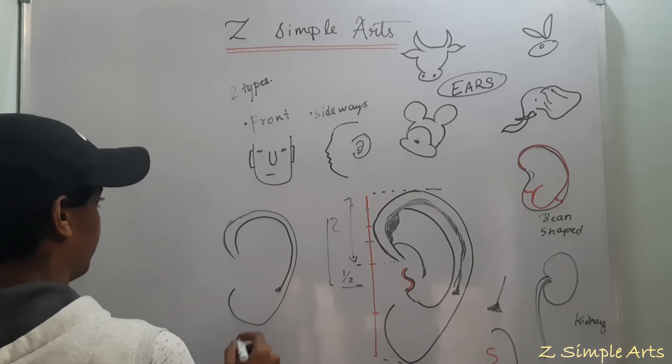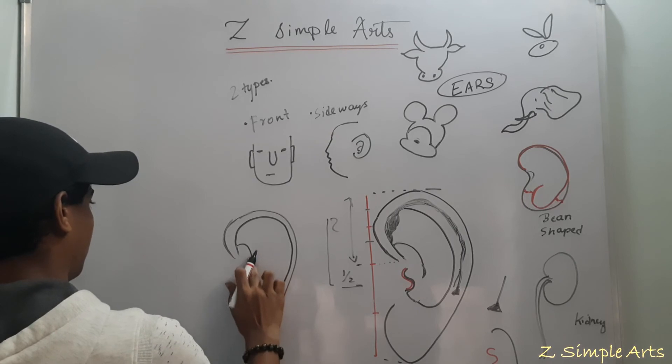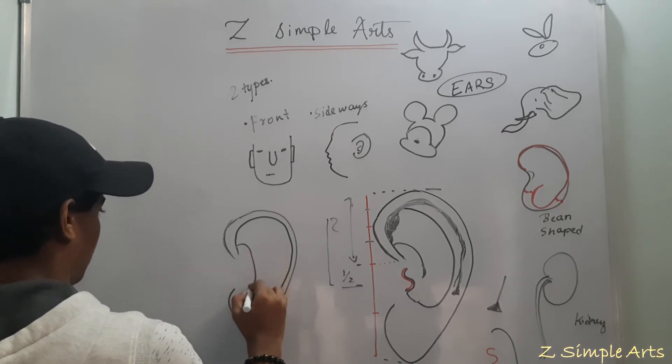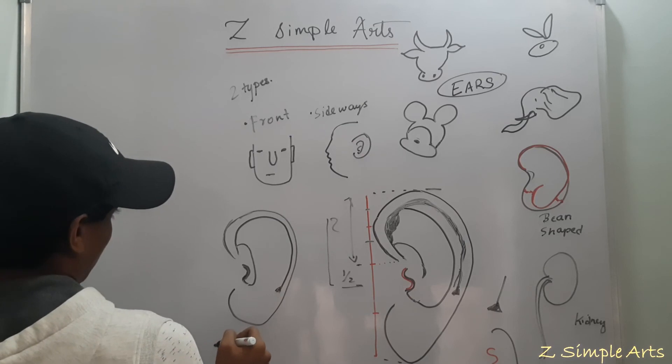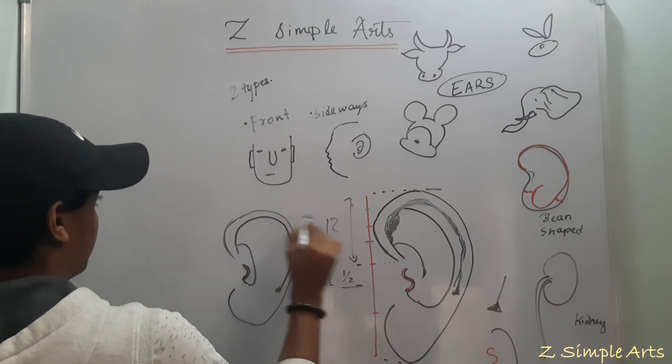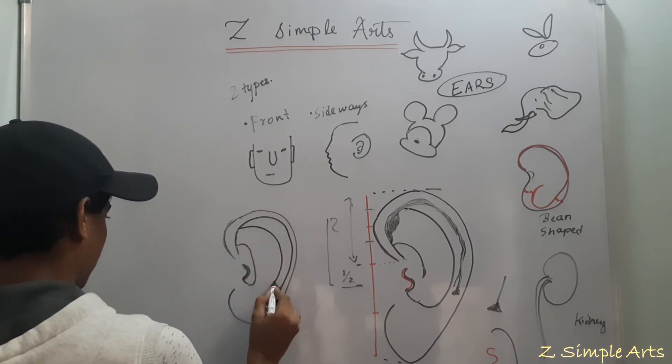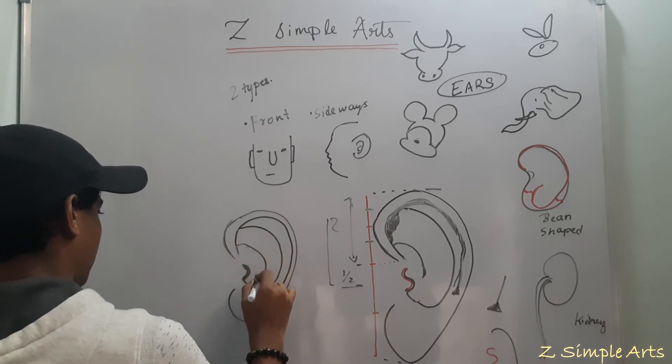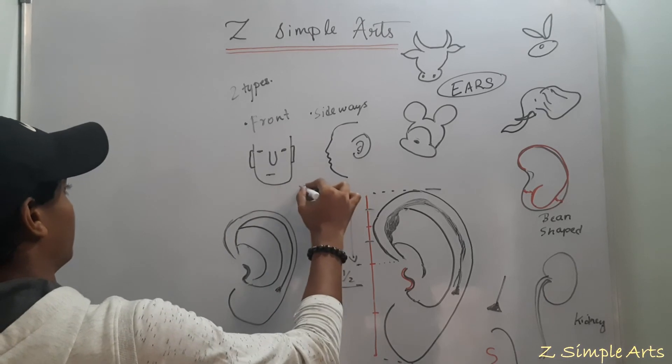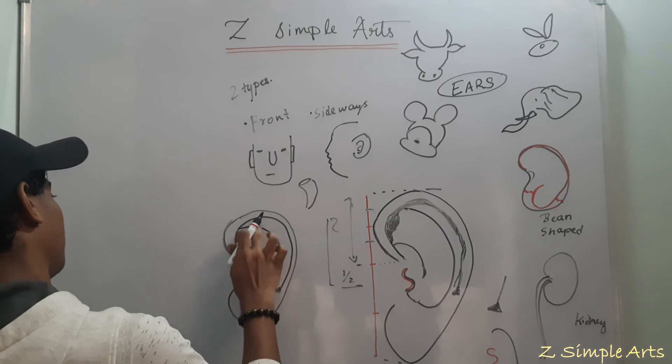So moving further, draw a C, elongated C. And Y. And the last part, from this point half, take a curve and join this line. This should look like a funnel, this part. So it's somewhat similar to a funnel.